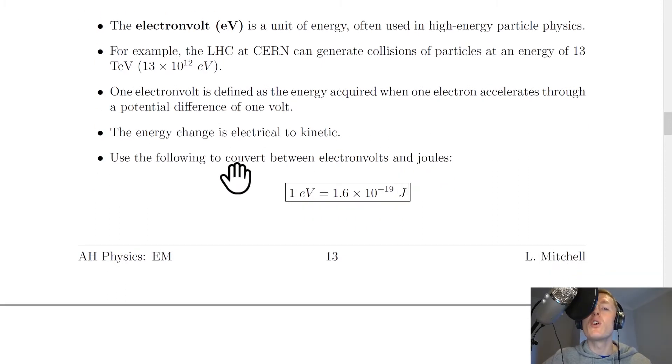We can also use the following to convert between electron volts and joules. So we have that one electron volt is equal to 1.6 times 10 to the minus 19 joules. And you might notice that this is the same value for charge on an electron.